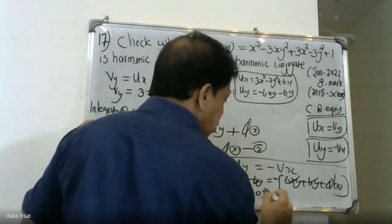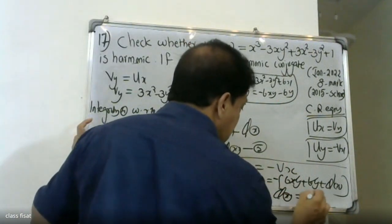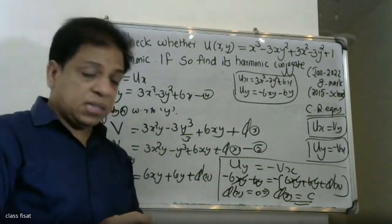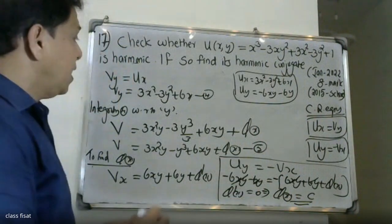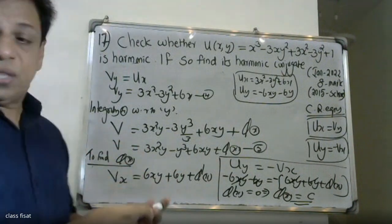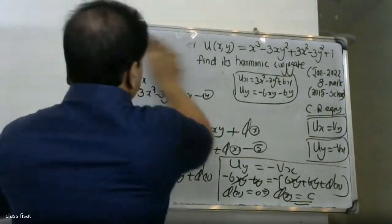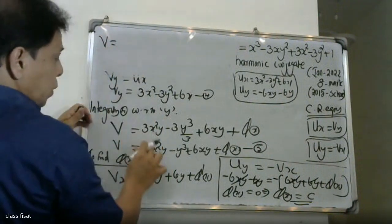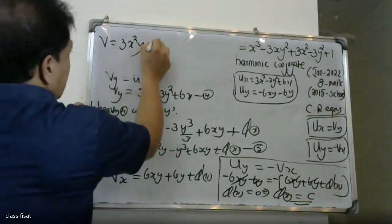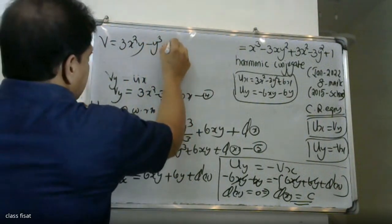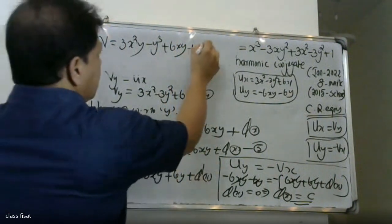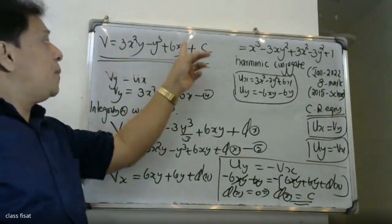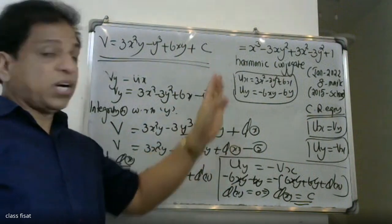Comparing, phi'(x) equals zero, so phi(x) equals c, a constant. Therefore the harmonic conjugate is v equals 3x²y minus y³ plus 6xy plus c. This function v is the harmonic conjugate of u.